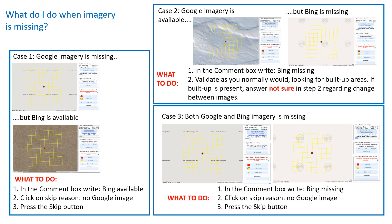Finally, in case three, both Google imagery and Bing imagery are missing. In the comment box, write Bing missing, choose no Google image as the skip reason, and press skip.